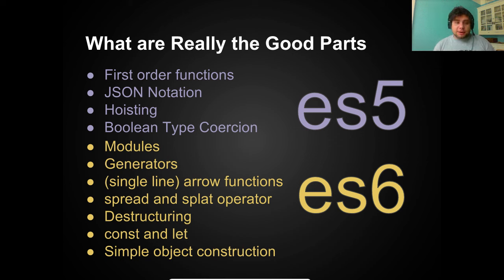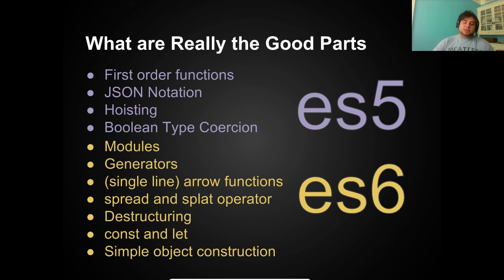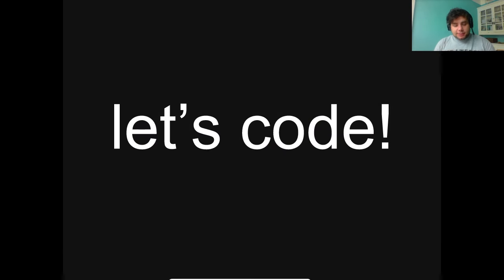Then we have all the stuff added in ES6. The biggest thing by far — probably the biggest feature in JavaScript, period — is JavaScript modules, which really makes JavaScript a true modern programming language. In addition, we have generators, which if you come from a C# background you can think of as yield and await combined but able to do so much more. Then arrow functions, spread and splat operators, destructuring of both objects and arrays, the const and let keywords, and simple object construction. Those last five are nice-to-haves, but not nearly as big a deal as the first two.